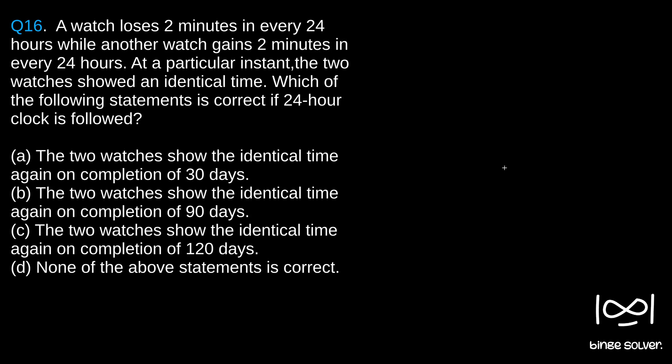Option A is the two watches show the identical time again on the completion of 30 days. Option B is 90 days and option C is 120 days, and option D is none of the above statements is correct.